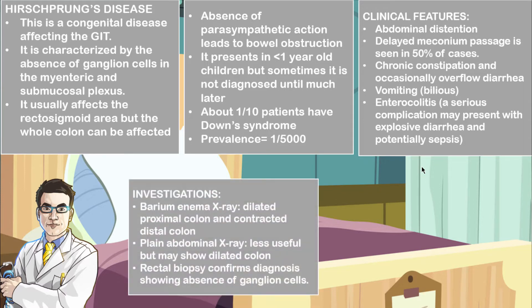Investigations include a barium enema x-ray, which is going to show a dilated proximal segment as well as a contracted distal segment of the colon. You may also order a plain abdominal x-ray, but this is less useful compared to the barium enema x-ray, and it may also show a dilated colon. Rectal biopsy is the definitive diagnosis of Hirschsprung's disease, as it will show the absence of ganglion cells in the myenteric plexus as well as the submucosal plexus.